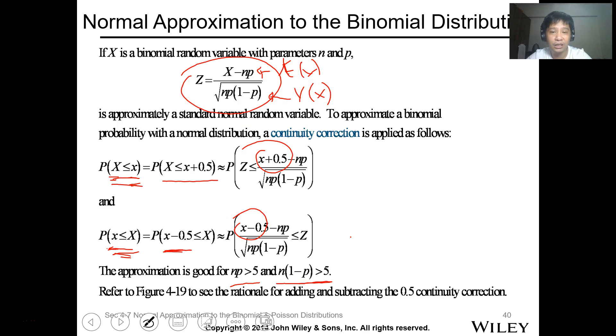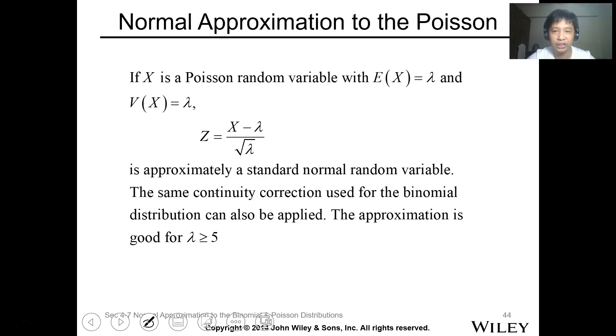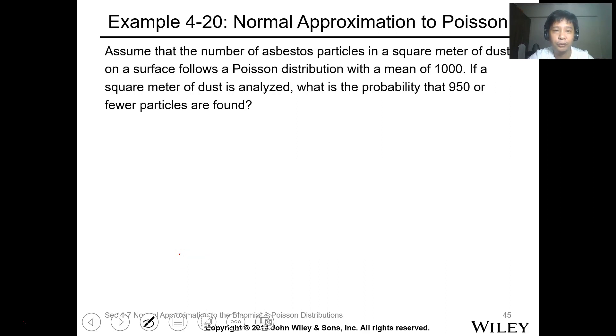Now, for the Poisson distribution, it's the same. But the difference is that, this is the z transformation. For Poisson, the expected value or the mean is lambda. And the variance is also lambda. So when you get the standard deviation, since this is standard deviation, square root of lambda. And it should be greater than or equal to 5, your lambda, for a good approximation.